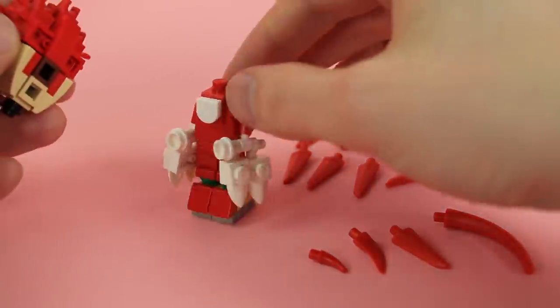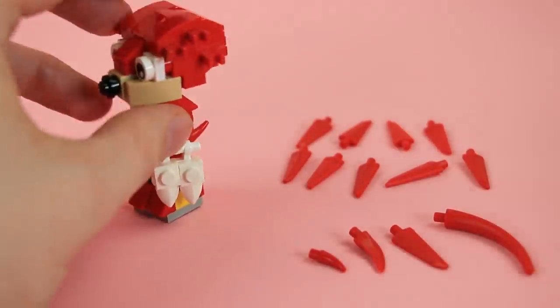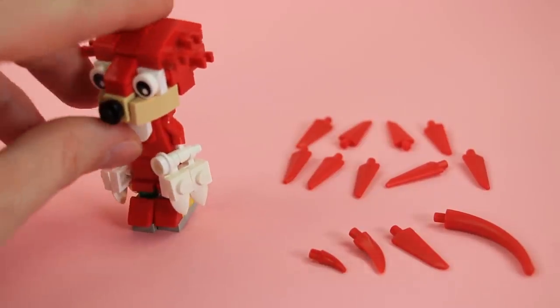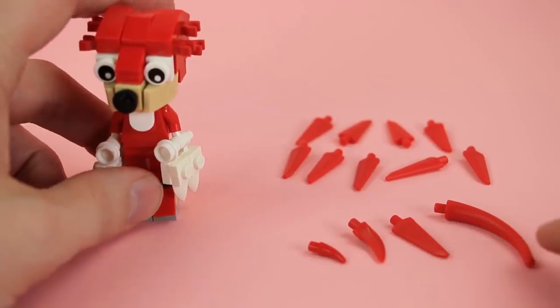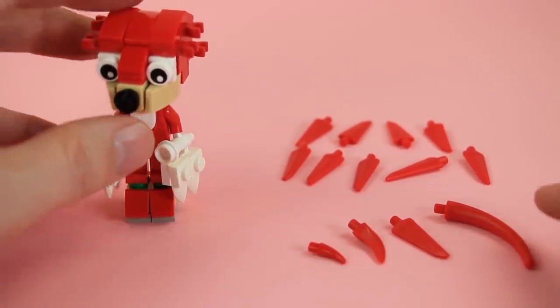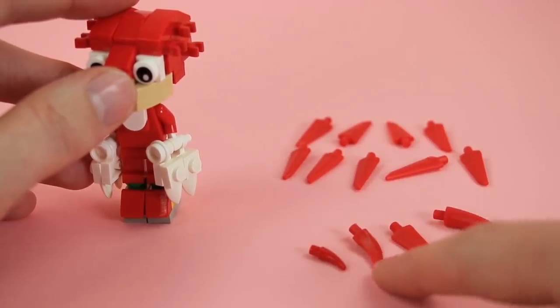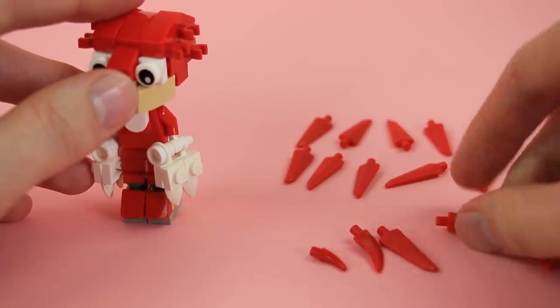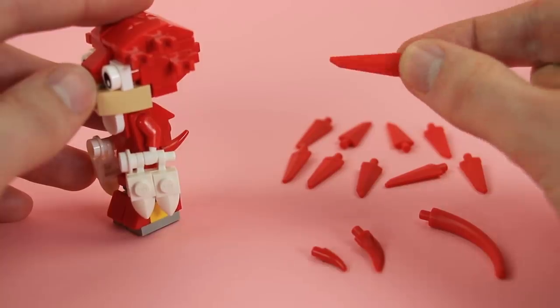Looking great. So at this point you can go ahead and attach Knuckles' head to his body. And then we're going to fill in all of these clip connections with some spikes to give him dreadlocks. So there's basically four different lengths of spikes that you can find in red pretty easily. Short ones, these more curvy ones, the longer straight ones, and the very long curvy ones. I went with these medium straight ones.